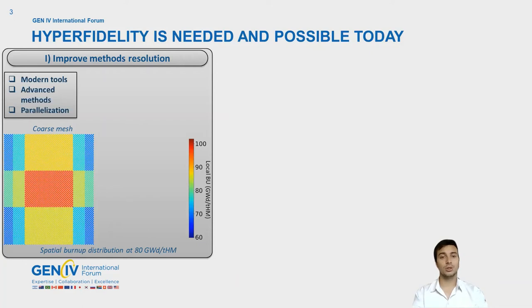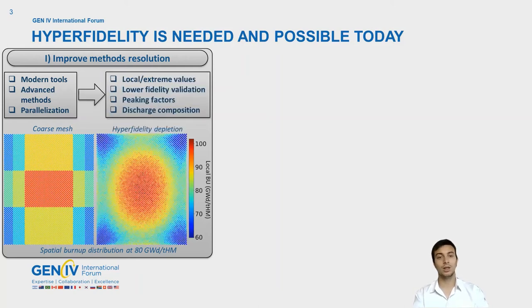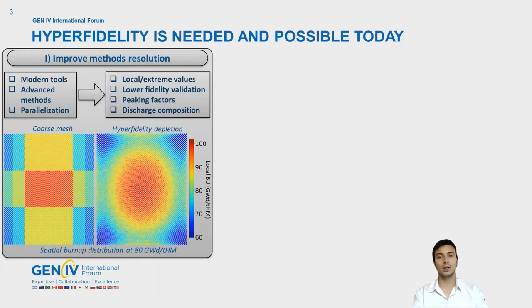Recent developments for computers and clusters and the use of parallelization allow for full-scale Monte Carlo simulations, and new codes using innovative transport methods and proposing features that are more adapted to PBRs greatly improve our possibilities. Higher resolution gives access to important local and extreme values, like pebble-wise isotope concentrations or burn-up. That is how we get from this simplified image to the individual depletion map that we have on the right. On top of that, higher fidelity can also be used to validate results obtained with these coarser methods.